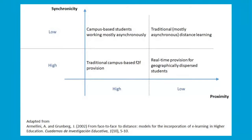The bottom-left quadrant refers to standard campus-based provision for most universities — the traditional campus offering. The top-right is traditional mostly-asynchronous distance provision. The interesting groups are the other two quadrants: top-left covers campus-based students who, because of COVID, were working mostly asynchronously — accessing webinars and lectures from halls of residence or from home. Bottom-right is real-time provision for geographically dispersed students — Teams, Zoom, or Blackboard Collaborate sessions like today.